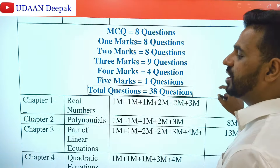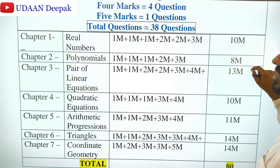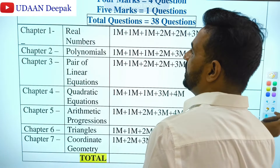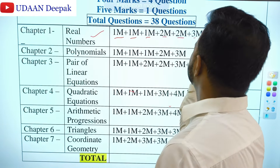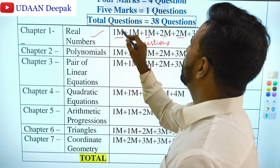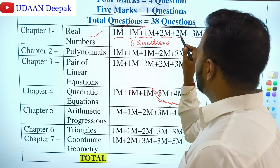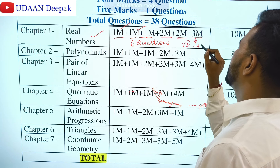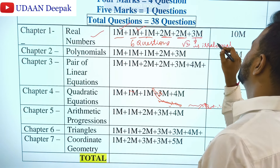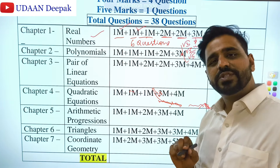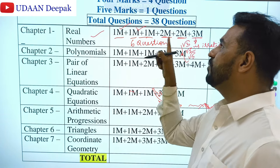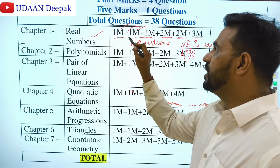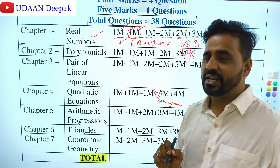Let us begin chapter-wise. From Chapter 1 — Real Numbers — you can expect 6 questions. You will get one objective type question, one 1-mark question, one 2-mark question, and one 3-mark question. For the 3-mark question, remember that proving root 2, root 3, or root 5 is irrational is a fixed question. For 1-mark and 2-mark, HCF and LCM prime factorization material is most important. One theory question on the Fundamental Theorem of Arithmetic is also expected. Total marks from Real Numbers: 10.